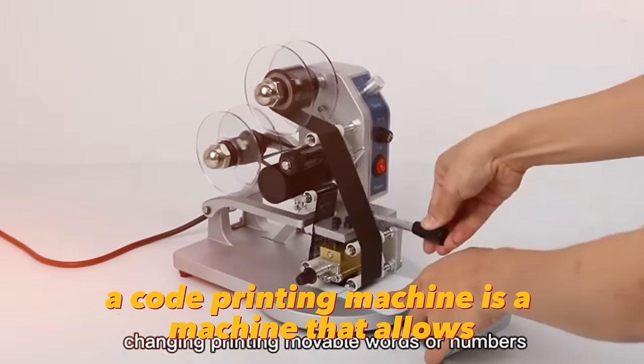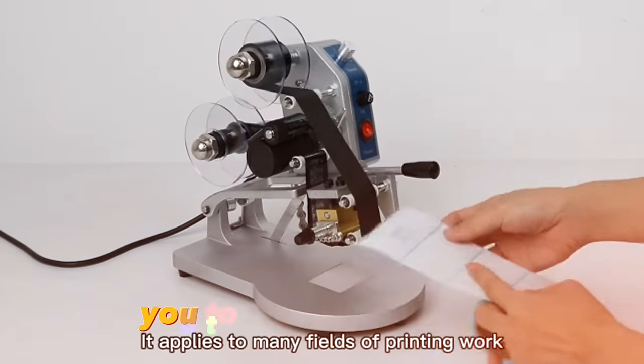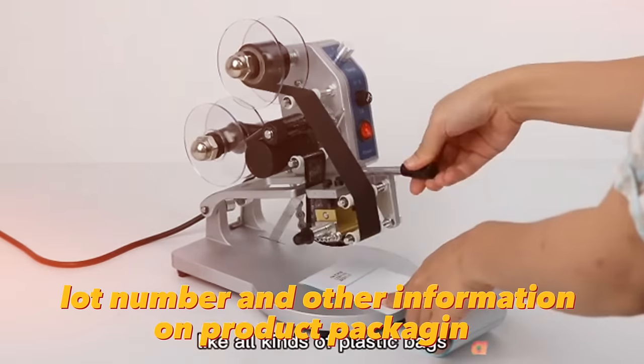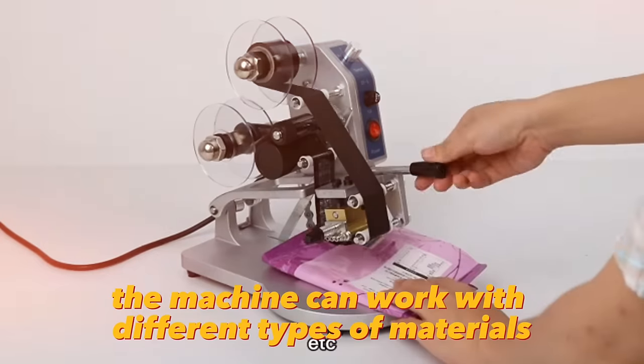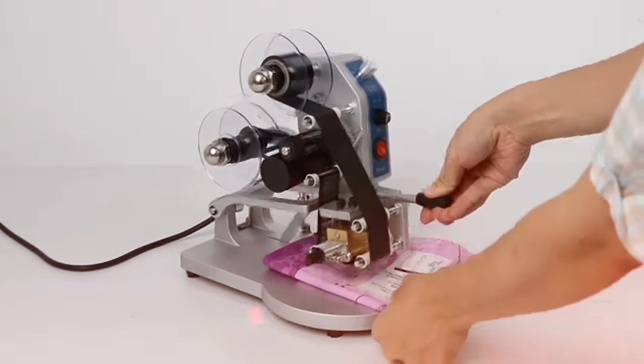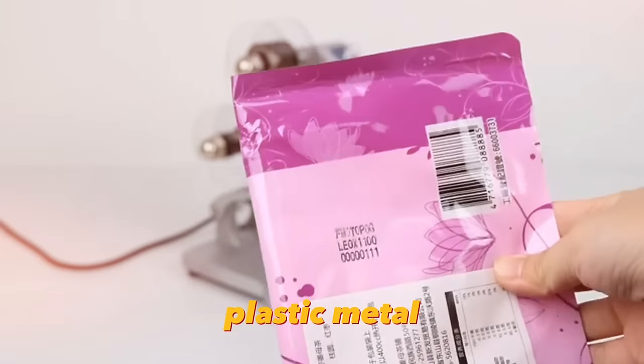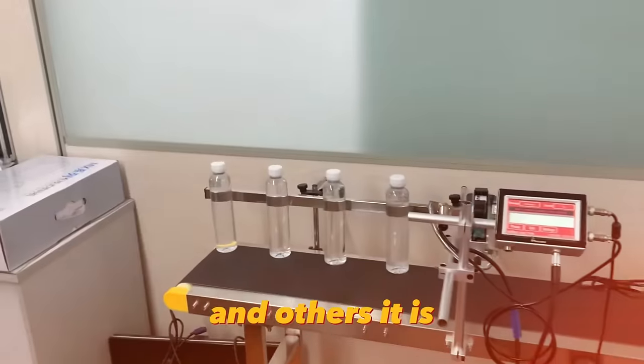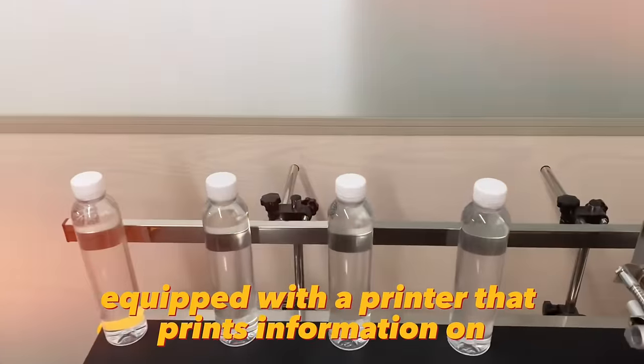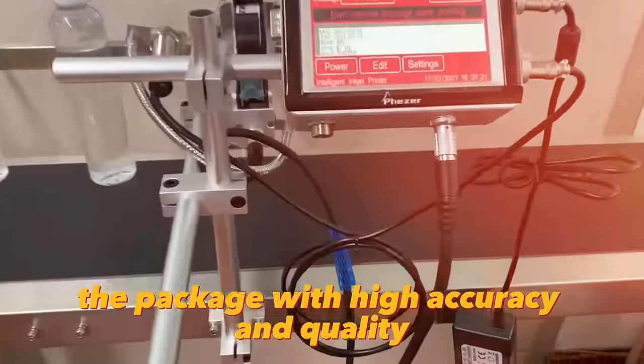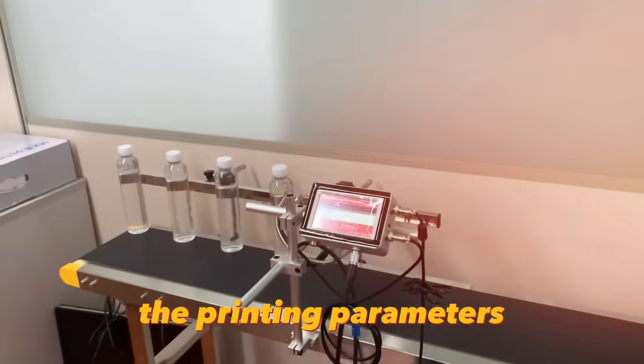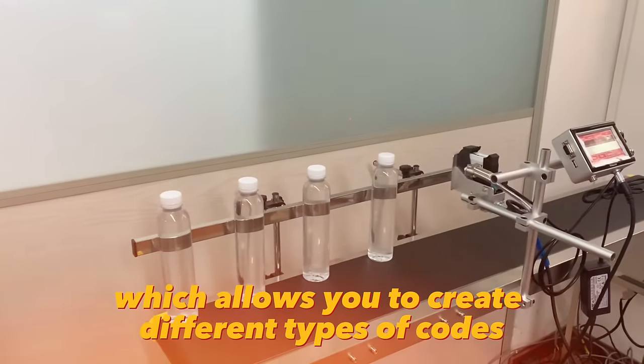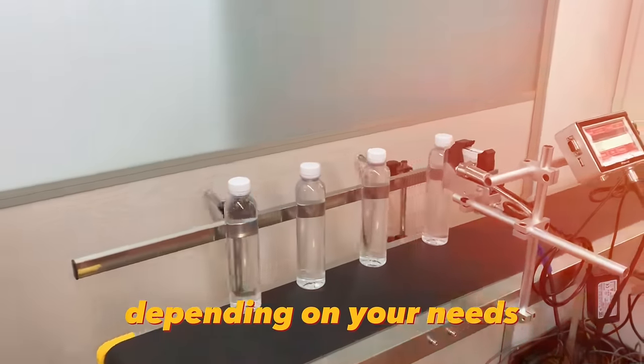A code printing machine is a machine that allows you to print expiration date, lot number and other information on product packaging. The machine can work with different types of materials such as paper, plastic, metal and others. It is equipped with a printer that prints information on the package with high accuracy and quality. The machine also has the ability to customize the printing parameters, which allows you to create different types of codes depending on your needs.